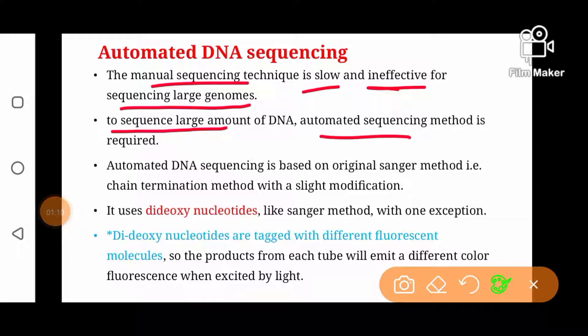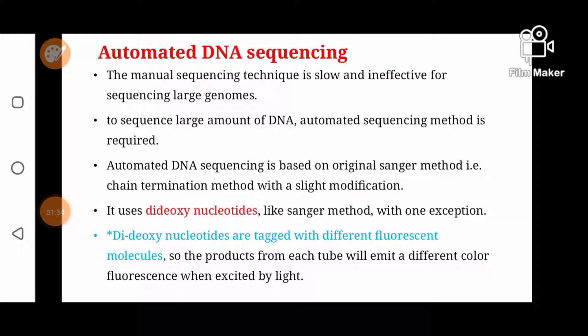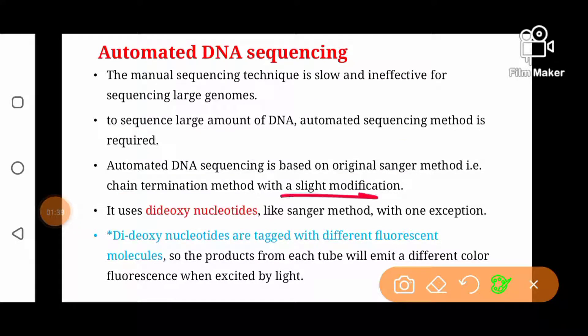The automated DNA sequencing we are going to discuss here is based on the original Sanger method — that is, the chain termination method. There is a slight modification: the original Sanger method is slightly modified for automated sequencing, but it uses the same principle.